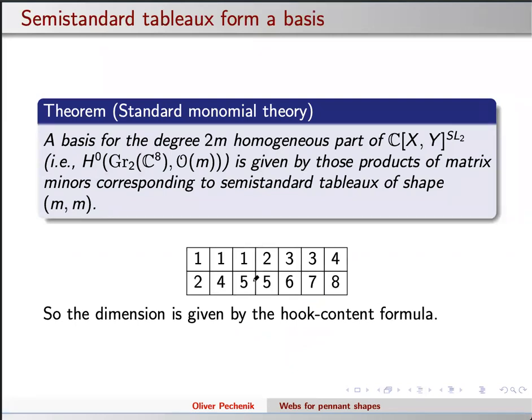The key thing of standard monomial theory is that I have these Plücker monomials that span my space, but they're not linearly independent — I would like to actually have a basis. If I look at m-fold products of Plücker variables, this spans some finite-dimensional space. Which ones should I look at to have a basis? The answer is to look at the arrays we wrote down before, and restrict attention to ones where the second row also happens to be weakly increasing. It turns out these are linearly independent and also spanning — so they're a basis. The dimension is known because there's a combinatorial formula for counting these semi-standard tableaux.